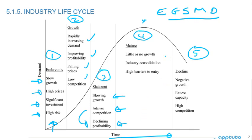In the mature stage, we have little or no growth, industry consolidation, and high barriers to entry. Finally, in the declining stage, there's negative growth — that's important to understand — excess capacity, because capacity was built as the industry grew, and now you're in decline. That excess capacity means prices are likely declining as well, and there's high competition among remaining competitors.